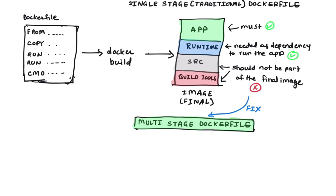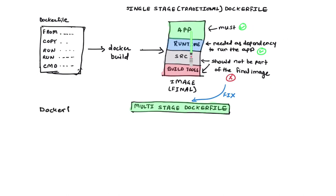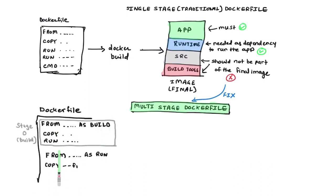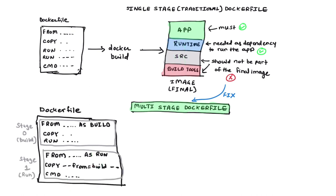Docker introduced multi-stage Dockerfiles sometime around 2018 or 2019. You can identify a multi-stage Dockerfile by the presence of more than one FROM instruction. From the first FROM instruction to the next, you have one stage. These stages are numbered implicitly as 0, 1, 2, and onwards. You can also name those stages with an alias — that's where you'll see labels like 'build' or 'run' and the equivalent of that.